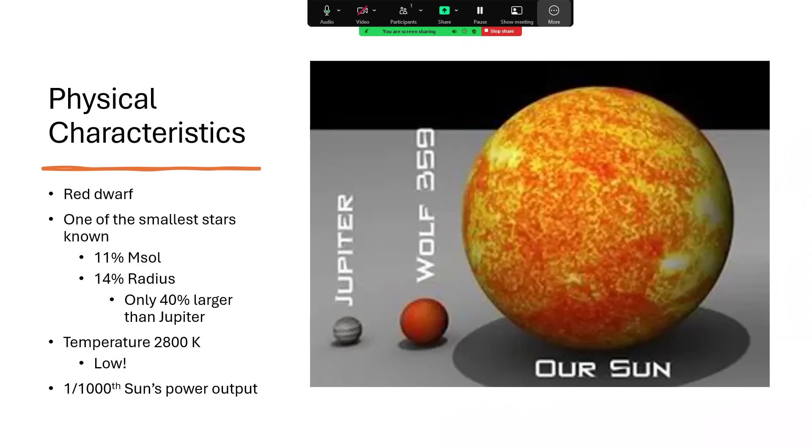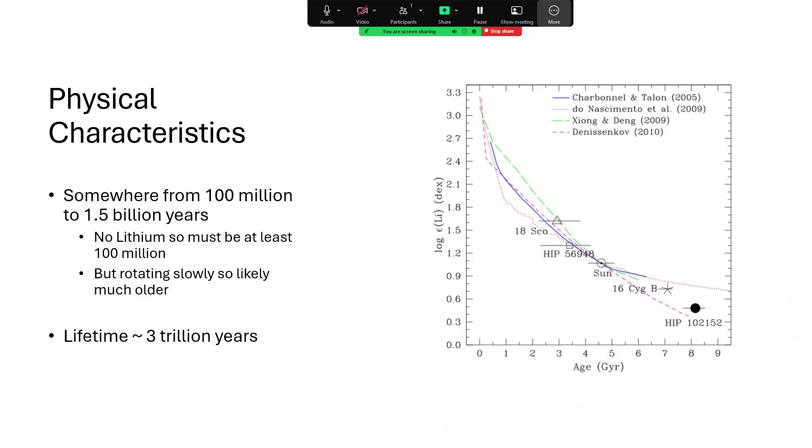It's only got one one-thousandth of the total heat output of our sun. It's burning away so slowly. And you can see that with roughly one-tenth of the radius, you would have one one-hundredth of the surface area, but the power output is one one-thousandth. And that's a reflection of the way that the lower temperature also reduces the power, all down to Stefan Boltzmann law, which I've discussed in other videos.